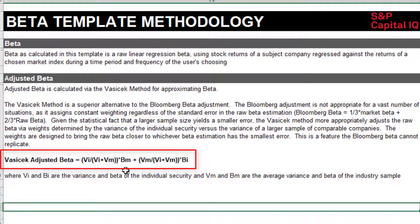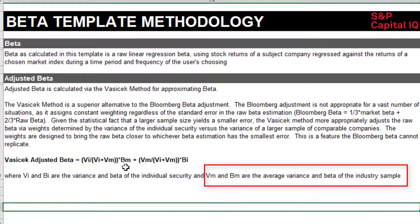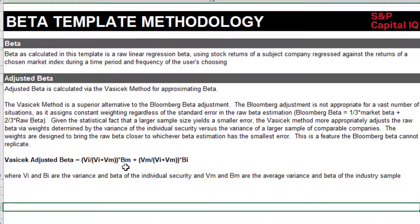The weightings are another key difference. It takes the variance of both the individual security and the industry sample. Unlike the Bloomberg method, it's not multiplying by the market beta. Instead, BM is the average beta of the industry sample. Companies should be of similar riskiness to others in their industry — certainly more similar than just the market as a whole. So this Vasicek adjusted beta uses actual peer companies, a different weighting scheme, and the average industry beta rather than the market beta of one.